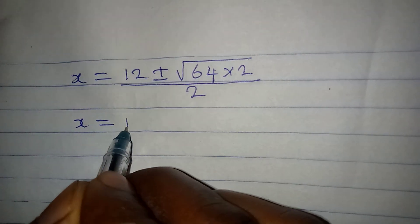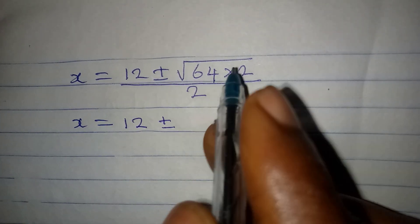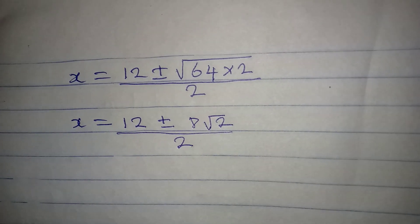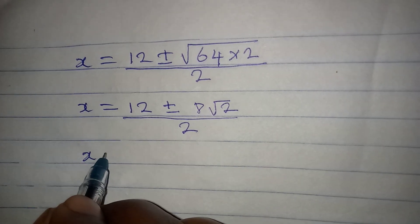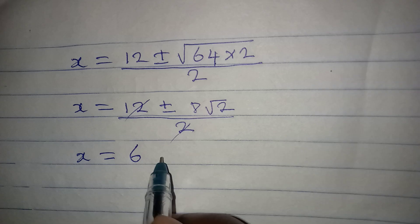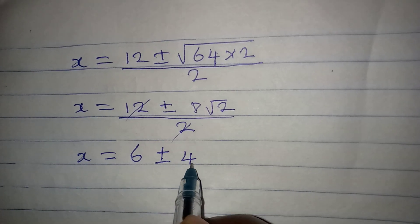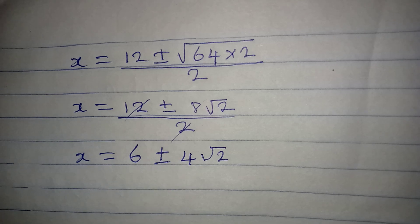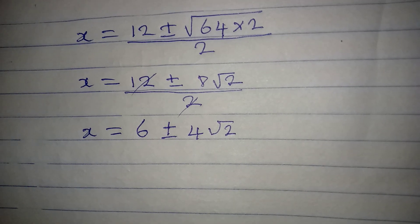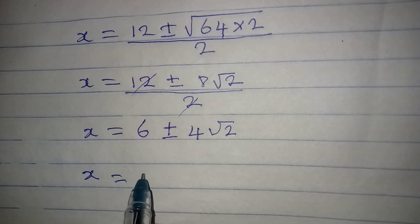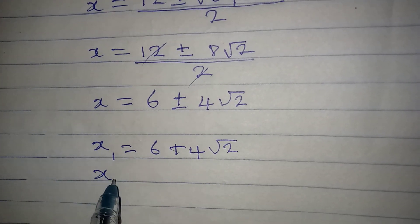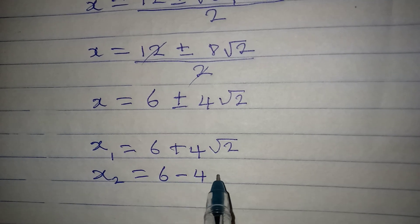So x equals 12 plus or minus 8 root 2, all over 2. Reducing to lowest terms by dividing by 2: x equals 6 plus or minus 4 root 2. This gives us two solutions: x₁ equals 6 plus 4 root 2, and x₂ equals 6 minus 4 root 2.